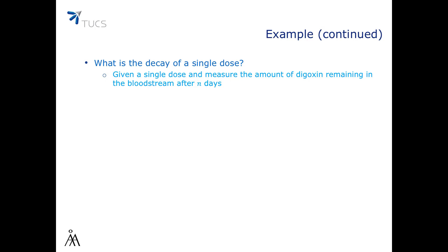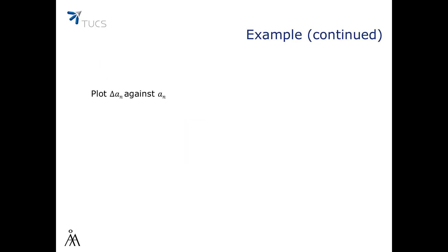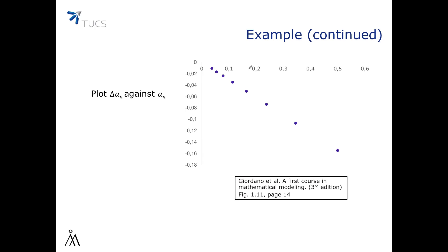We should first find out what's the decay of a single dose — given a single drug dose, what's the amount of drug still in the bloodstream after n days? Assume we have some experimental data. We can plot the change between consecutive values against the current value, and we observe a linear dependency seen as a straight line. We can measure the slope of the line to be -0.5. So the model we write is aₙ₊₁ - aₙ = -0.5·aₙ, which means aₙ₊₁ = 0.5·aₙ.